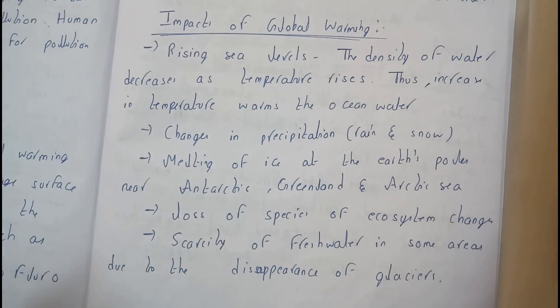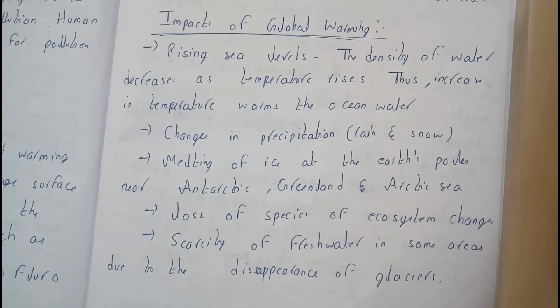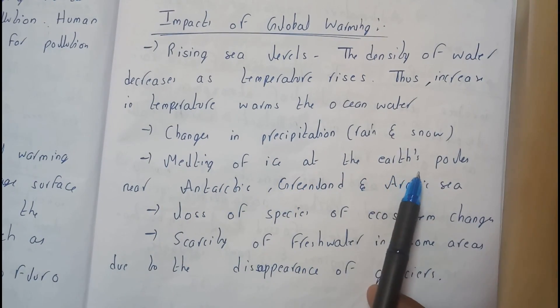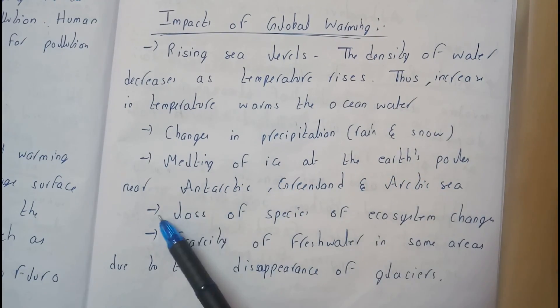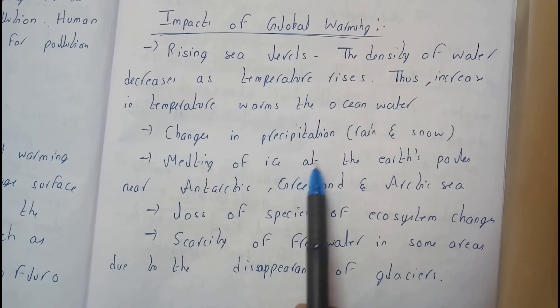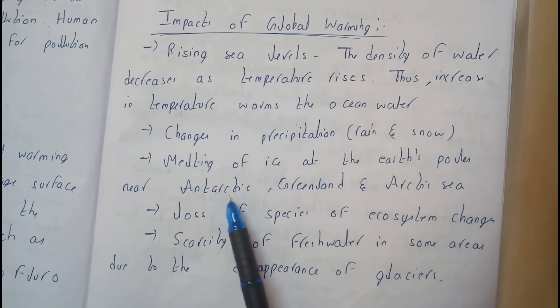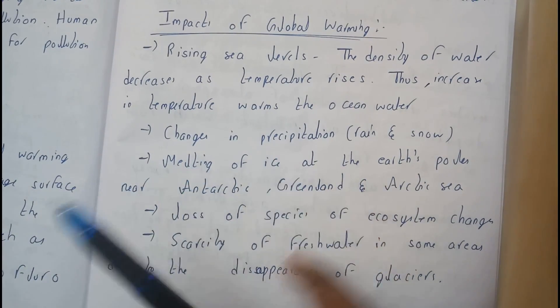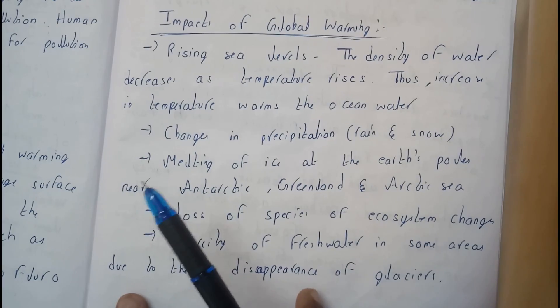Change in precipitation between rain and snow — precipitation will be changing as temperature increases. Melting of ice takes place at Antarctica, Greenland, and wherever there are icy areas.